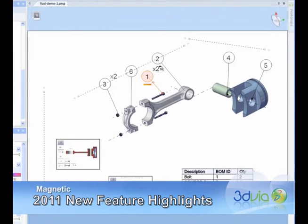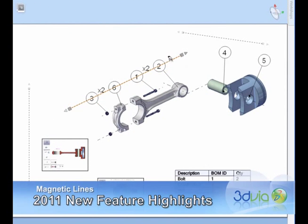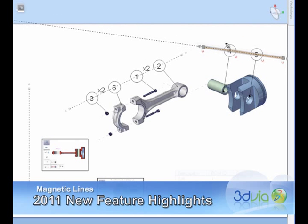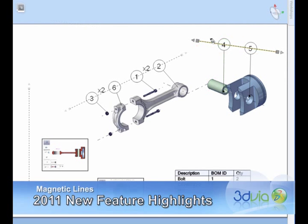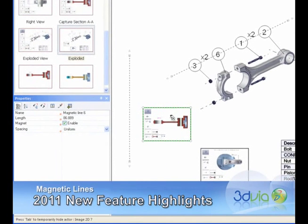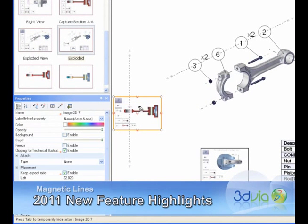3D Via Composer continues to provide innovative and unique features that help to get work done quickly. Magnetic lines are new tools that provide a very efficient and easy way to align and perfectly space objects. They can be positioned anywhere in the 3D scene, and can even be aligned to part edges or axes.